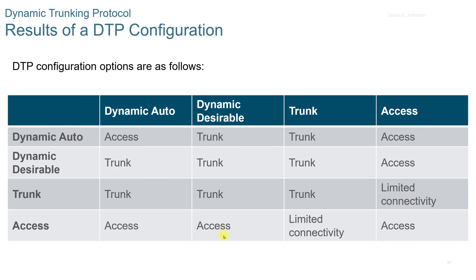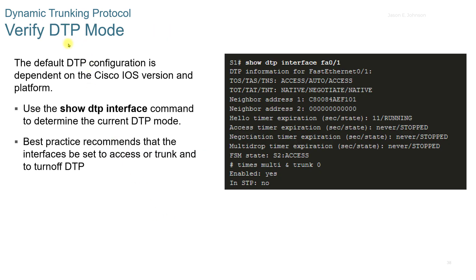The DTP configuration options are Dynamic Auto, Dynamic Desirable, Trunk, and Access. To verify DTP mode, note that the default DTP configuration depends on the switch or IOS version. Use the show dtp interface command to determine the current mode. Best practice recommends setting interfaces to access or trunk and turning off DTP.